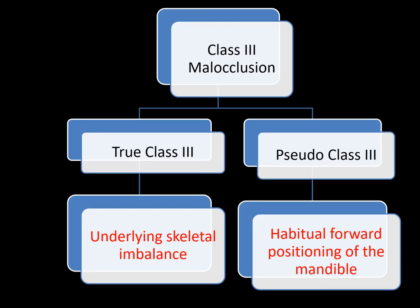Let's start to talk about the classification of Class 3 occlusion. We can subdivide it into two types based on clinical examination findings: true and pseudo Class 3. True Class 3 often has genetic bases. On the other hand, pseudo Class 3 develops because of the habitual forward positioning of the mandible. To adequately treat malocclusions, we should first identify the cause.